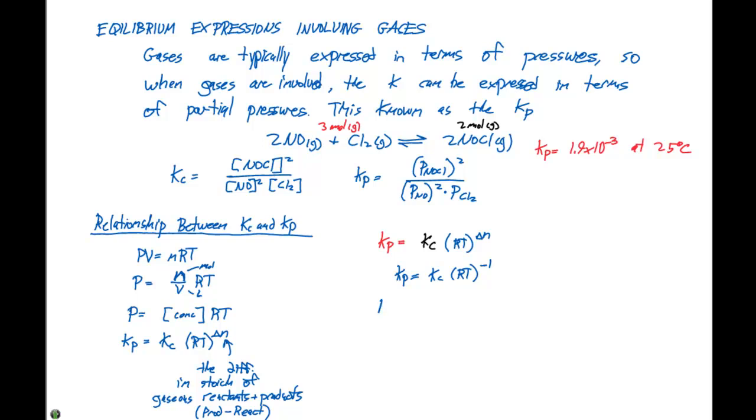So the Kp is going to be 1.9 times 10 to the minus 3. That equals the Kc times R. And in this case, remember, we're using the ideal gas equation here, so we have to use the 0.08206 liter atmospheres per mole Kelvin times the temperature. 25 degrees Celsius, we need to convert this to Kelvin or 298 K, and all of this is going to be raised to the minus 1 power.